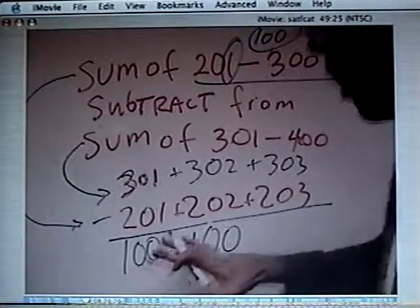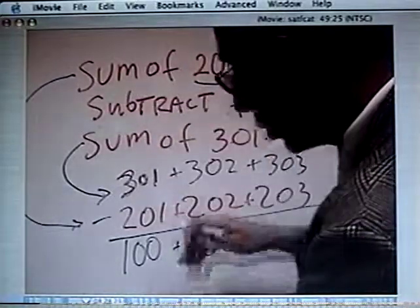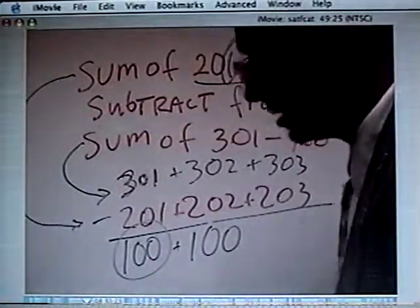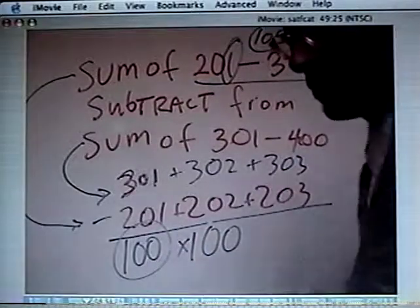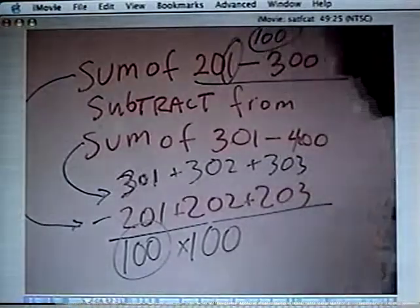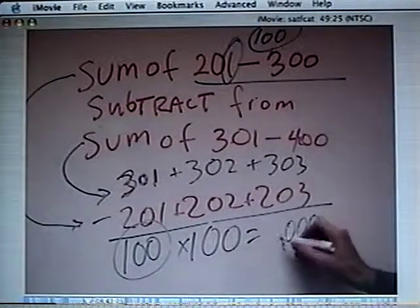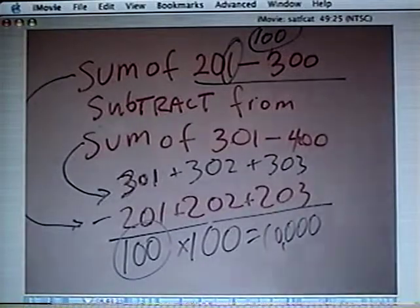So we have 100 numbers, and the difference between each one is 100. So I'm going to say the total difference is 100 times 100. How many zeros is that? That's what I get.